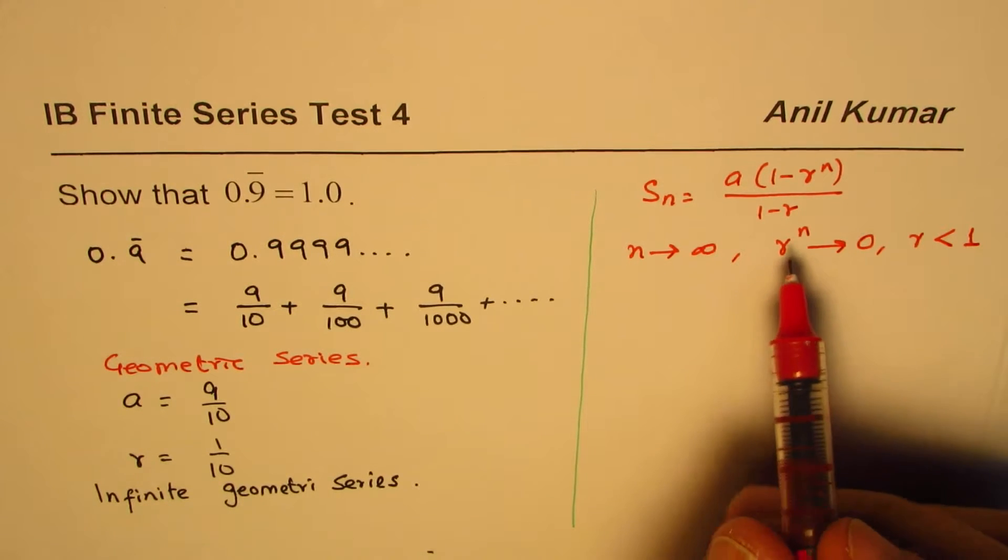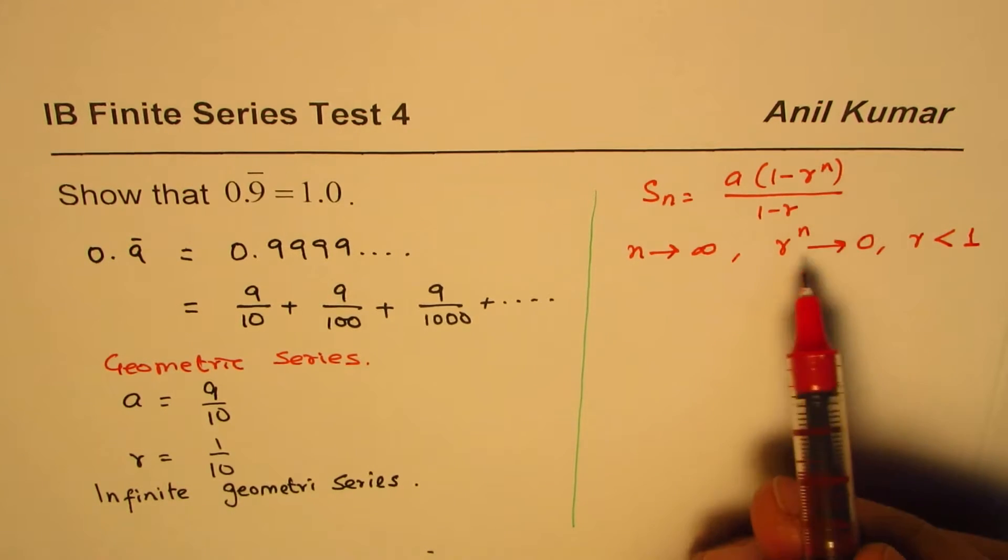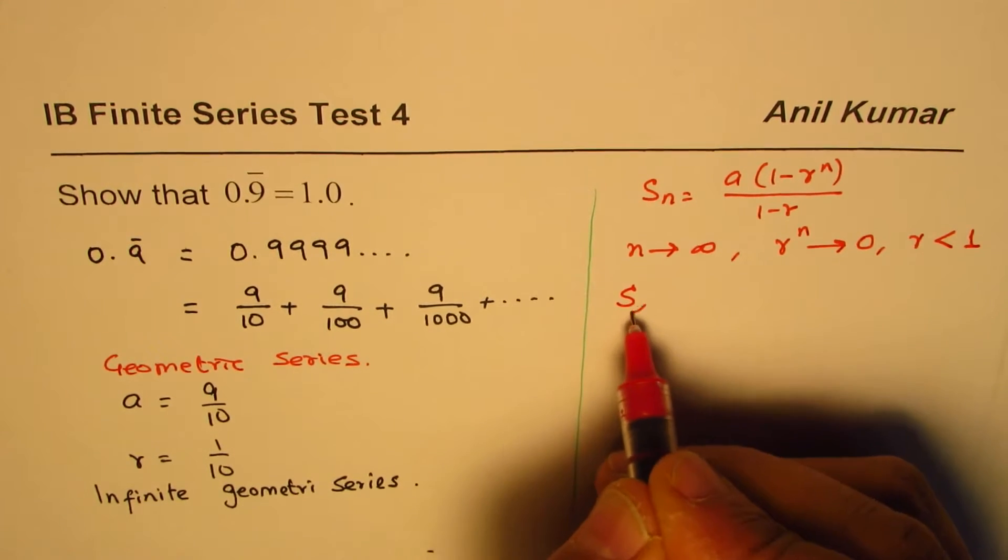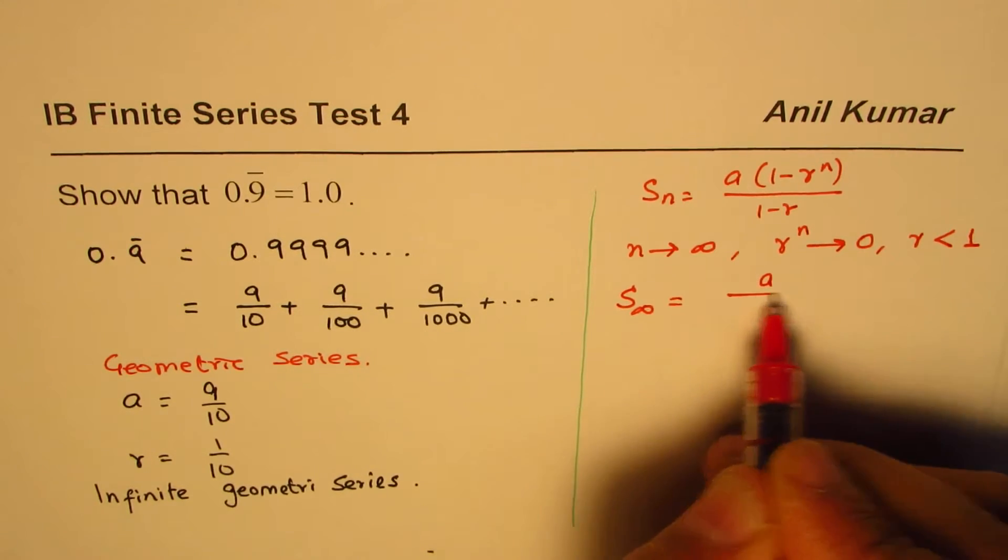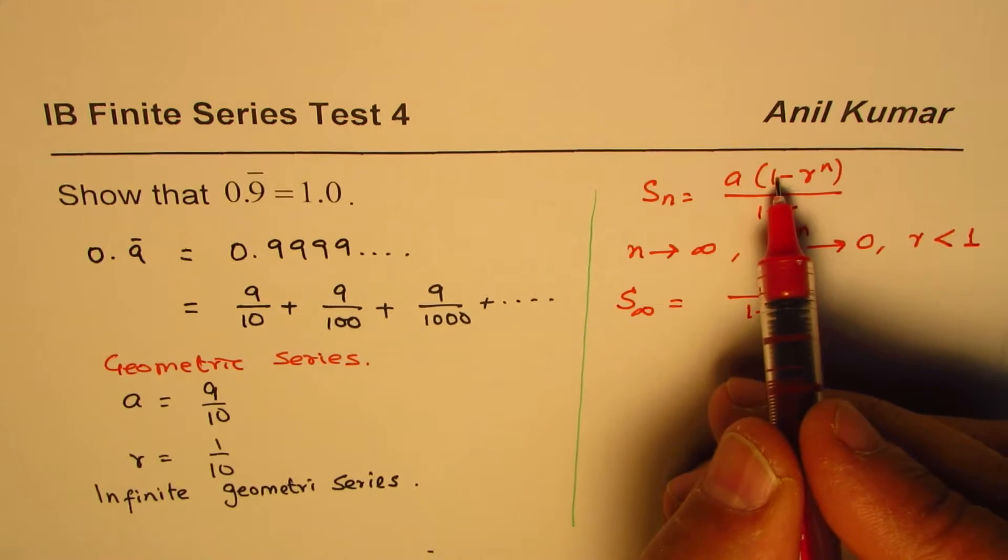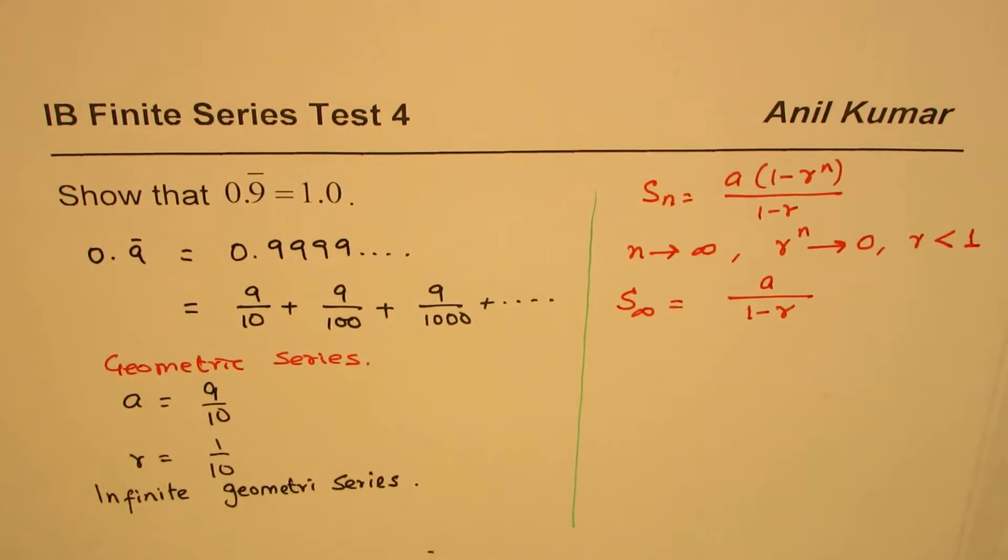And therefore the formula for infinite terms in a geometric series is a/(1 - r). This r^n term becomes zero, so you get a times 1 divided by (1 - r). Now in our case, a is 9/10 and r is 1/10.